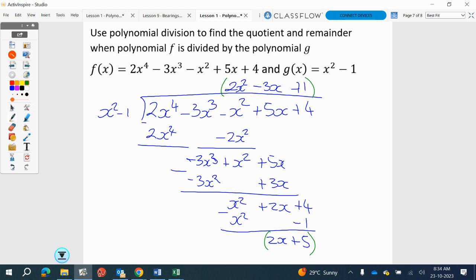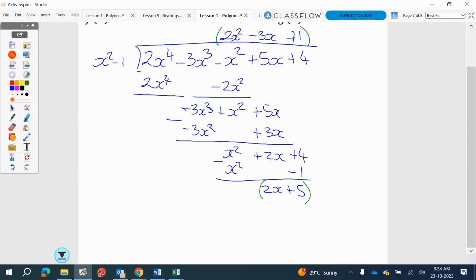Sorry, let me just finish it off. So we've got to find the quotient and remainder when f of x is divided by g of x. So this means that f of x is equal to g of x multiplied by our quotient, 2x squared minus 3x plus 1, plus 2x plus 5. And here we have our r of x, our remainder, and our q of x.